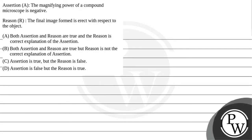Hello guys, let us read the question. In the question I have given an assertion-reason problem. The assertion says that the magnifying power of a compound microscope is negative. And the reason states that the final image formed is inverted with respect to the object.